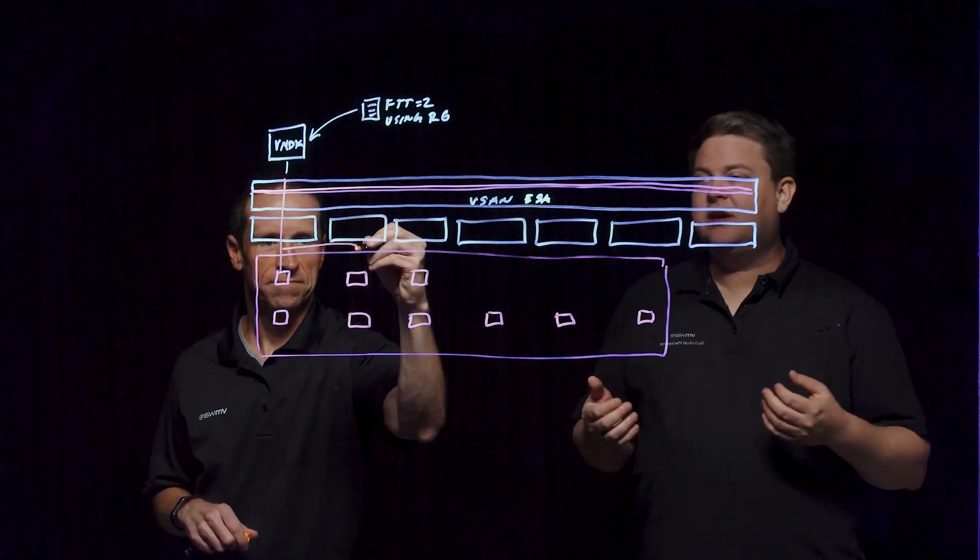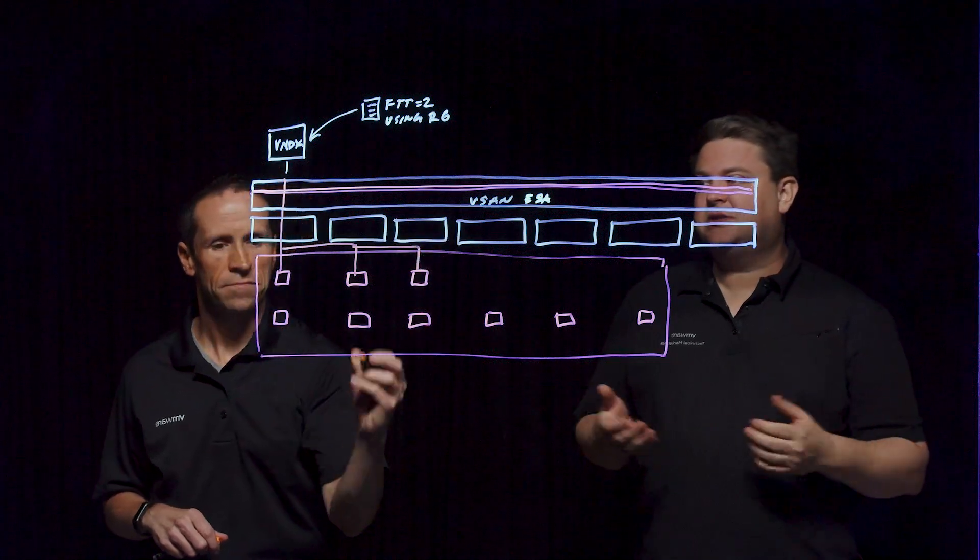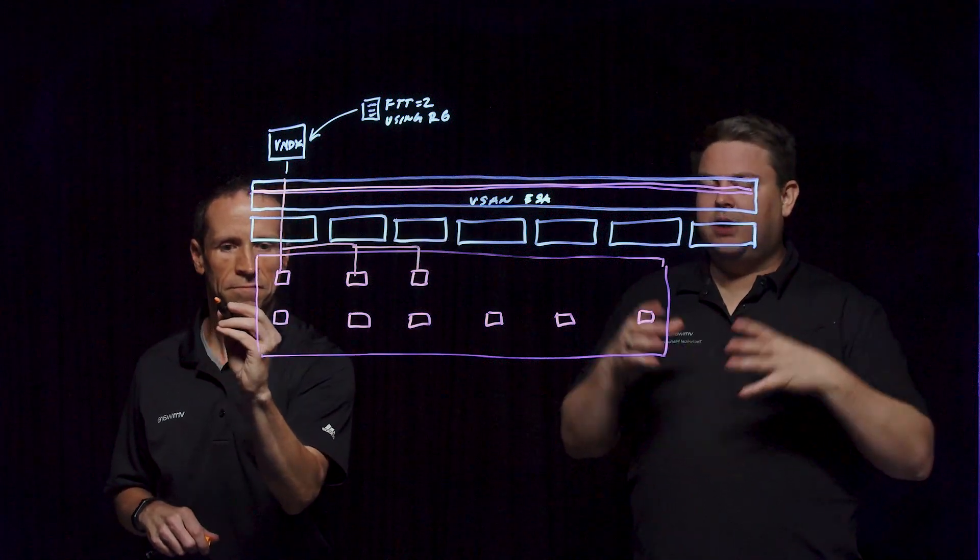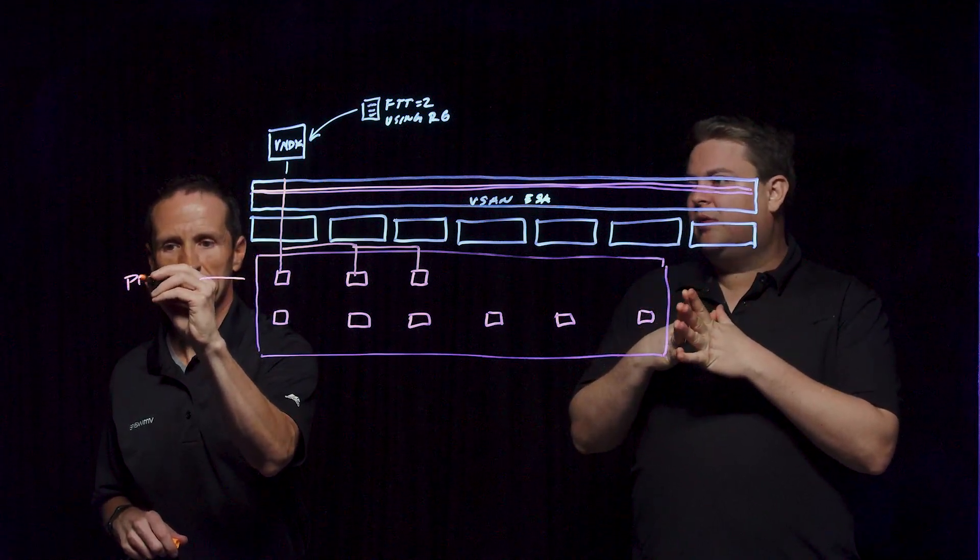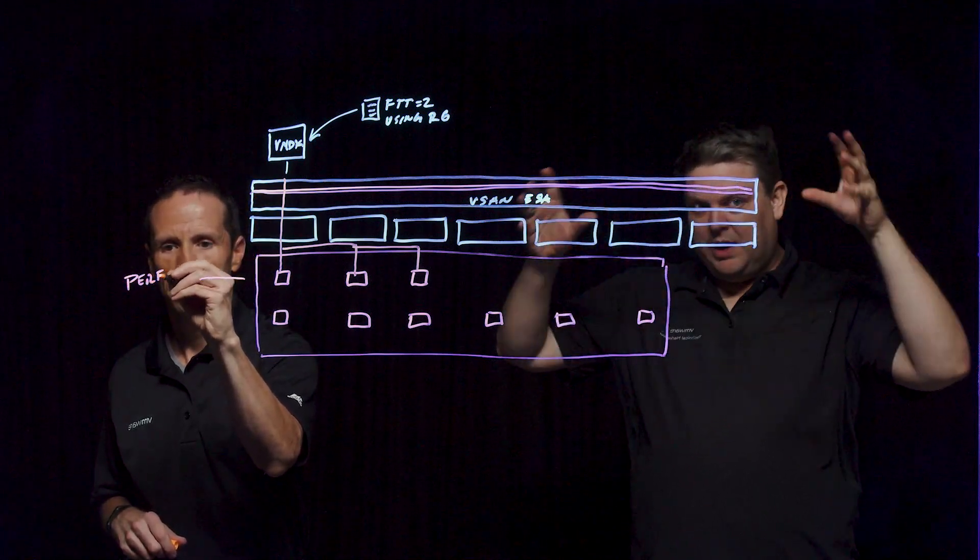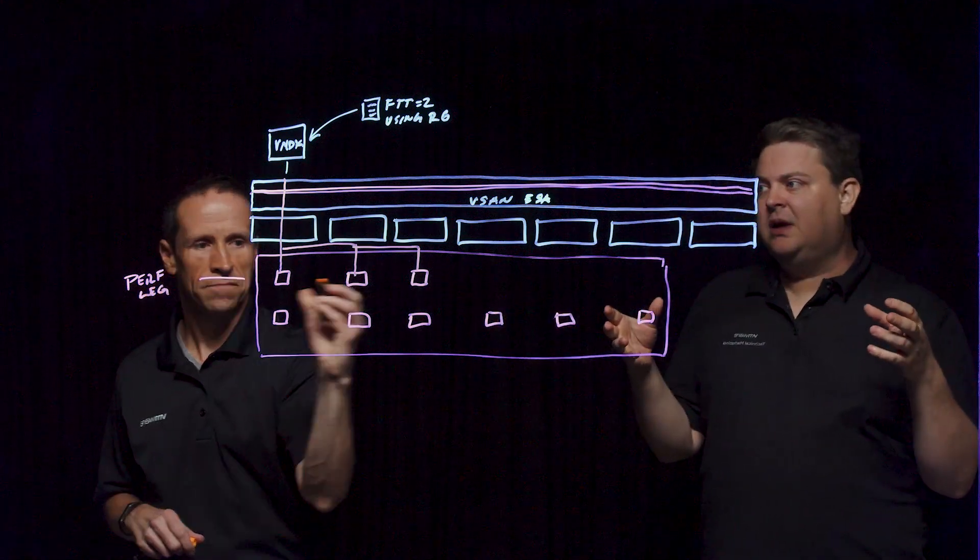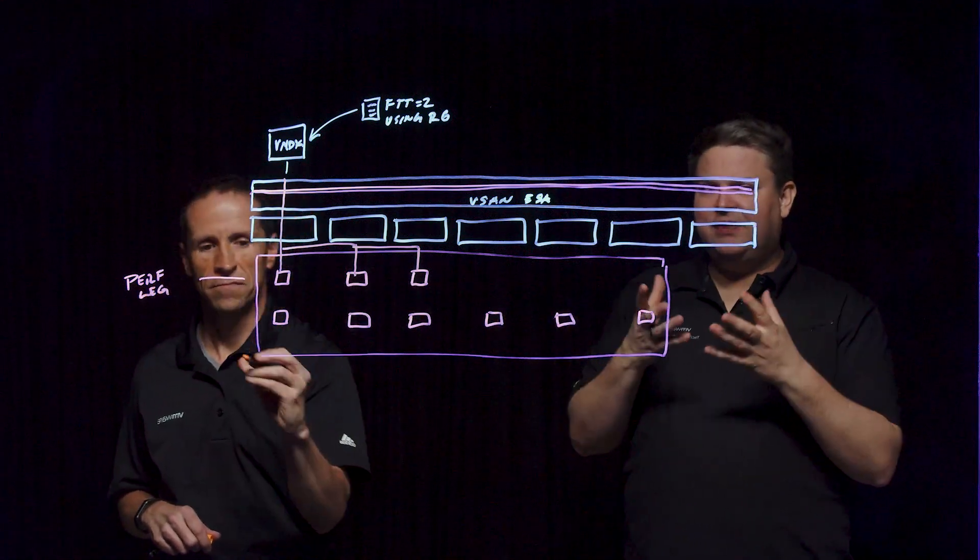Now, we're using a new vSAN log structured file system. And this log structured file system goes and it coalesces multiple writes together within this performance leg that follows a RAID 1 type structure, does a mirroring type protection. And it's going to compact that data.